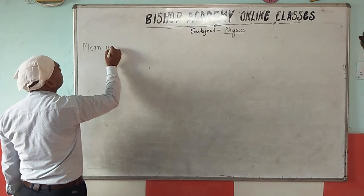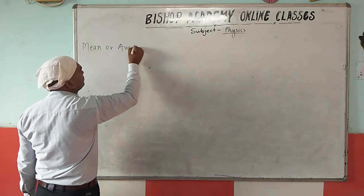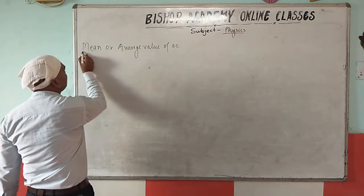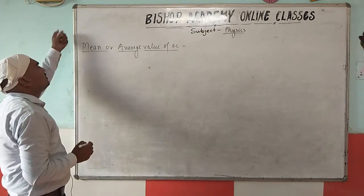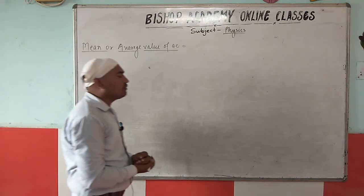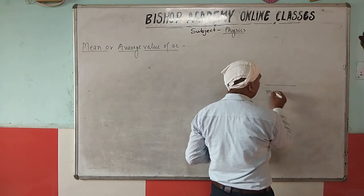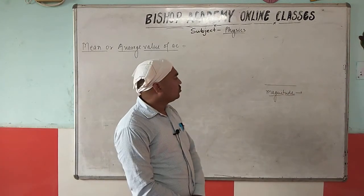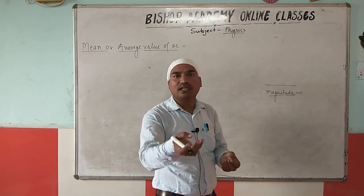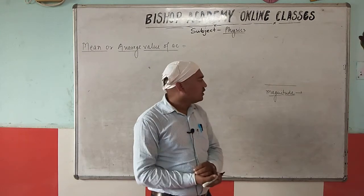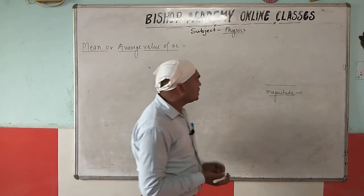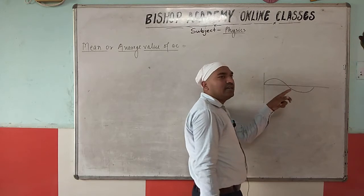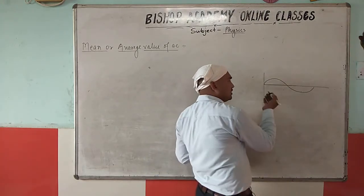First, we need to understand why the mean or average value is required. As you know, alternating current is a varying quantity — its magnitude keeps changing. So you cannot state a fixed magnitude. Therefore, for a continuously varying quantity, we take the average over a complete cycle.